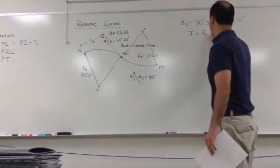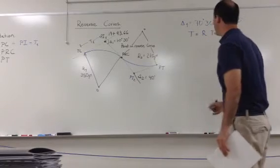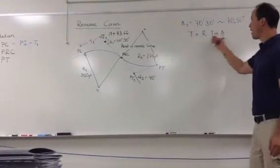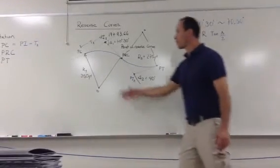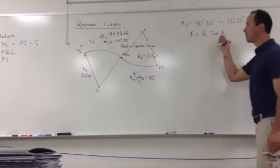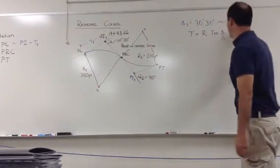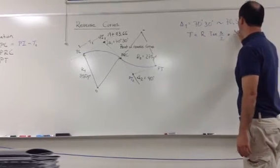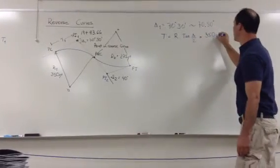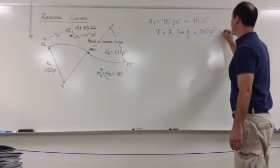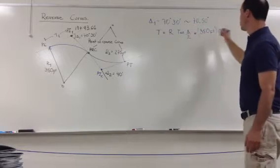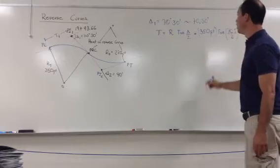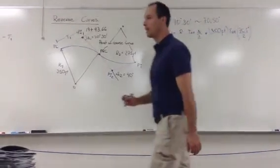Alright, so radius tangent delta divided by 2. We come in here, we see what we have. Do we have radius for the first curve? Yes we do. What about delta? That's what we have. So tangent will be equal to the radius, which is 350 feet, times tangent of delta, which is 70.5 degrees, divided by 2. And how much is T? What's the answer for T?